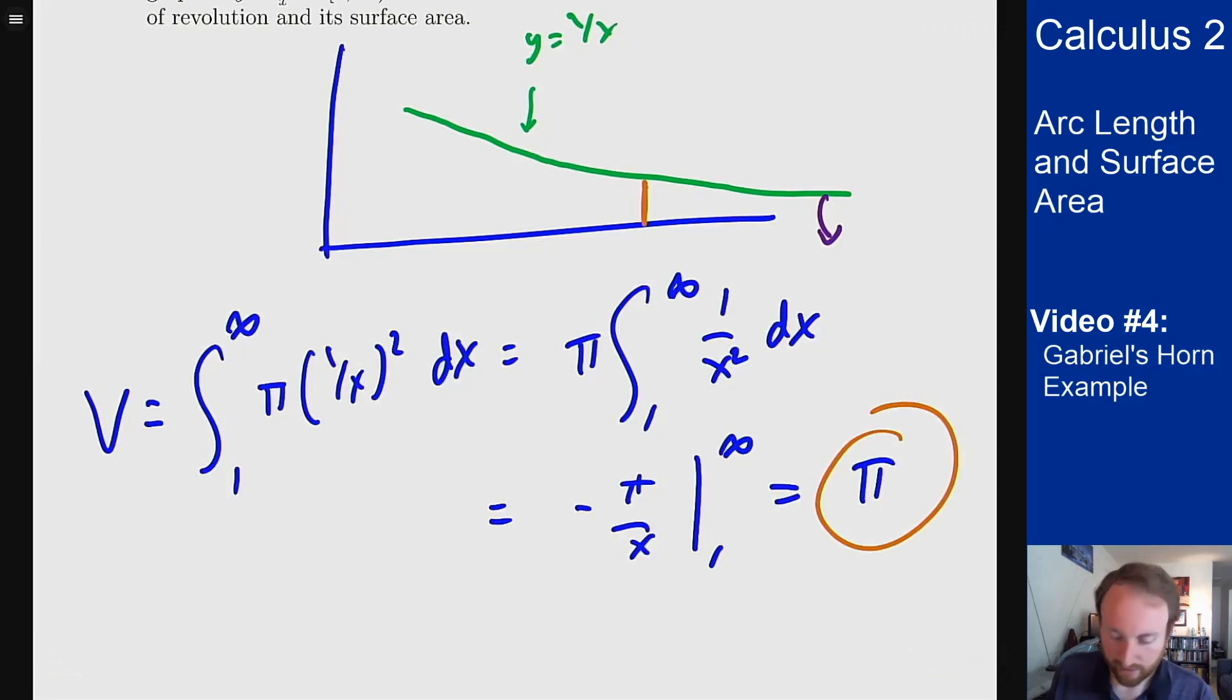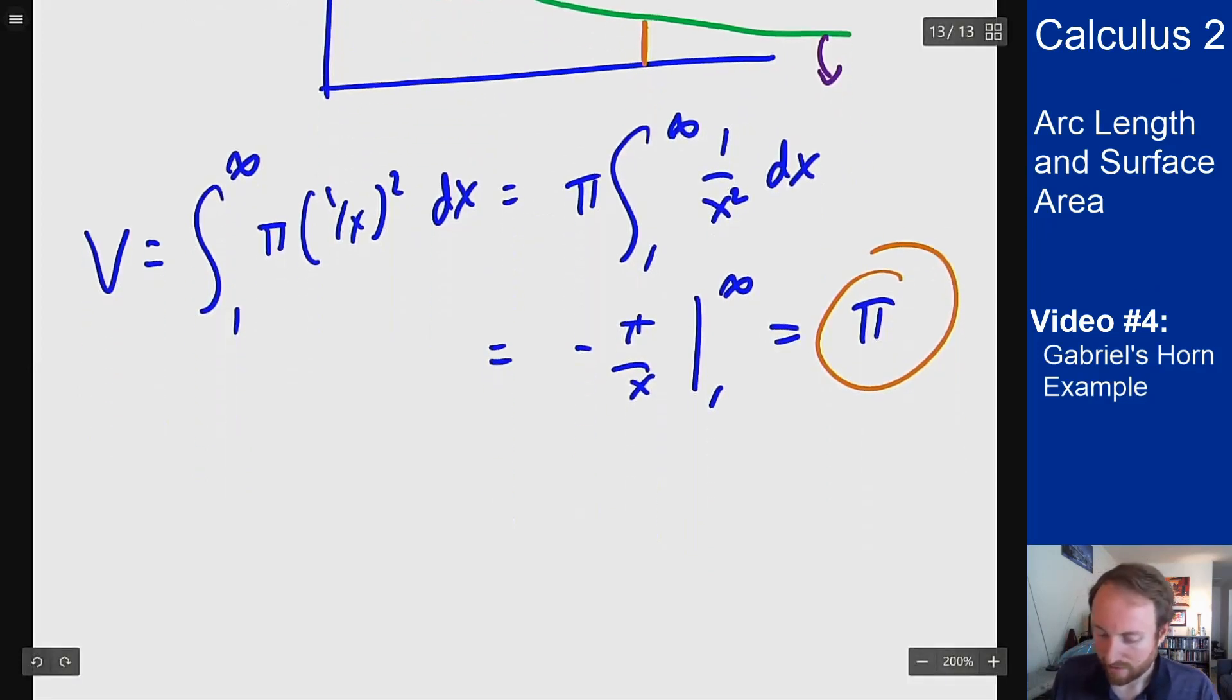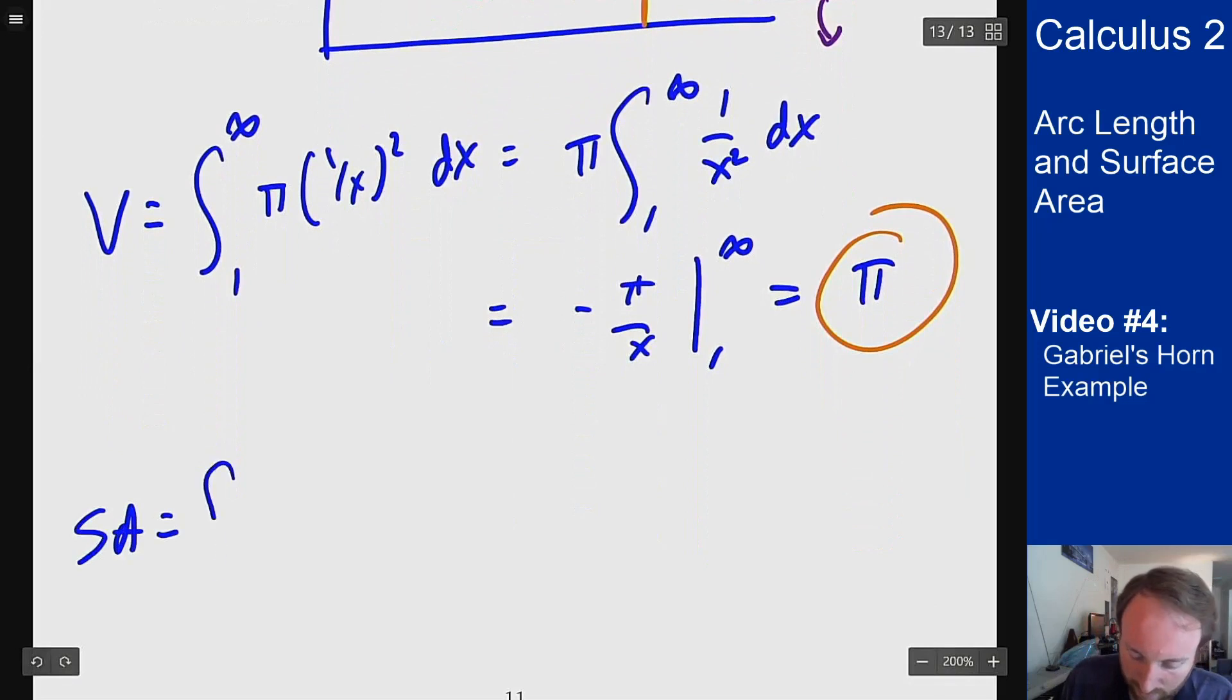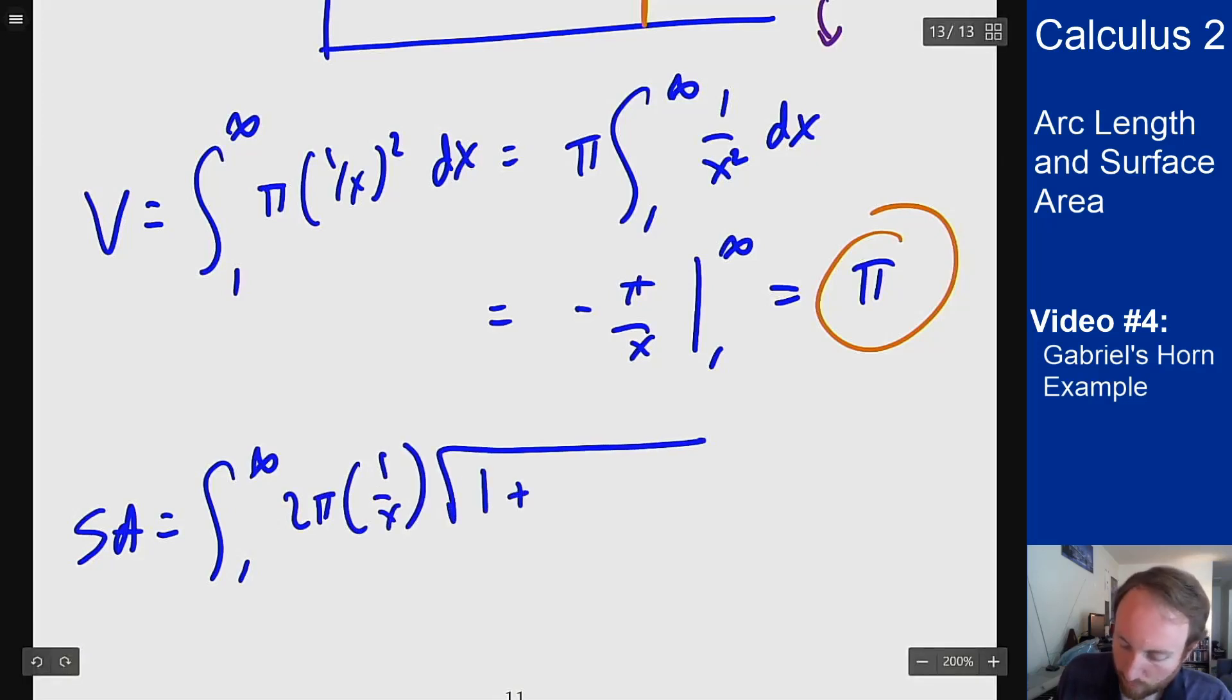What about its surface area? Now its surface area we know how to calculate from our formulas on surface areas of these solids. The surface area should be found by the integral from one to infinity of two pi times the radius, one over x, times the height, which is square root of one plus one over x to the fourth dx.